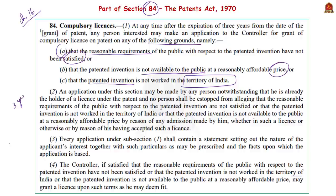Such an application for a compulsory license can be made at any time after the expiration of three years from the date of the grant of a patent. From this, we can infer that within three years of a patent being granted, it must reasonably satisfy the requirements of the Indian public, and very importantly, the patented invention must be available at a reasonably affordable price. If conditions are not fulfilled by a patentee and a competent person applies for compulsory licensing, the controller may grant a license upon such terms as she may deem fit. This license has a special responsibility to fulfill the three conditions within a span of two years.